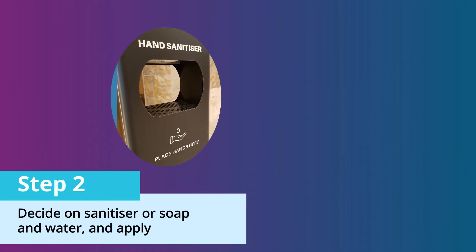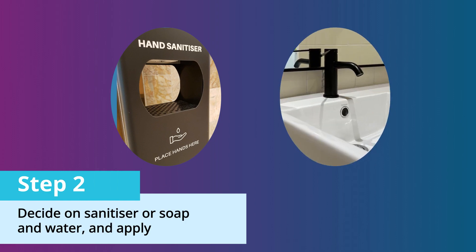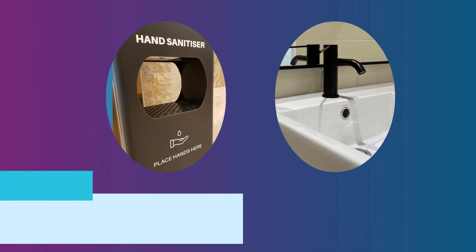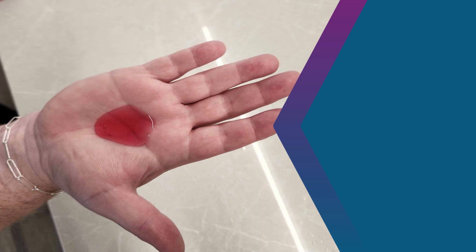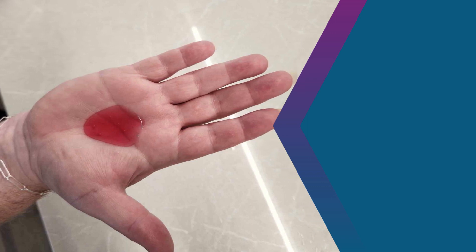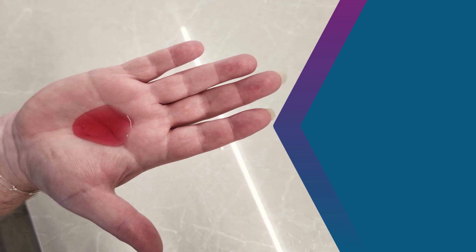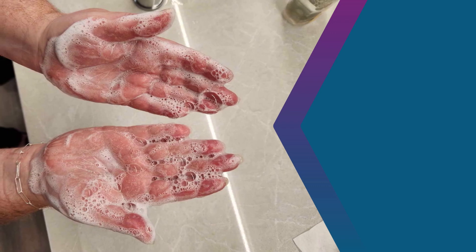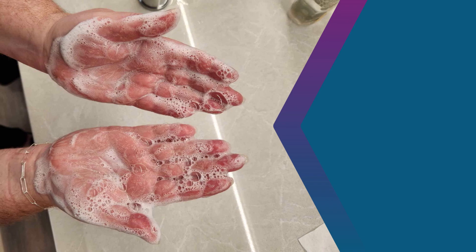Step two: decide if you need to use sanitizer or soap and water, and then apply enough product to your hands. For sanitizer, use a blob around the size of a 50 cent piece. For soap, make sure it is enough to get the hands soapy.